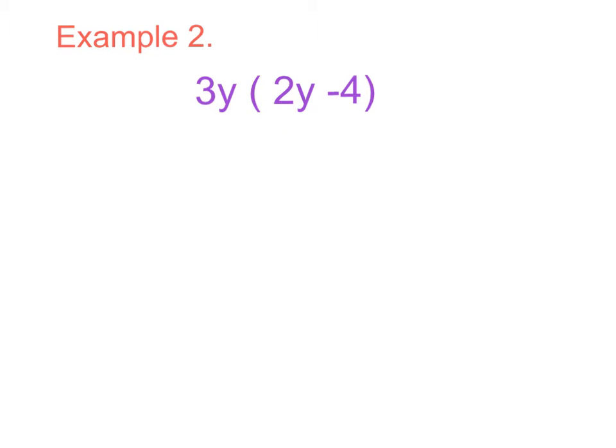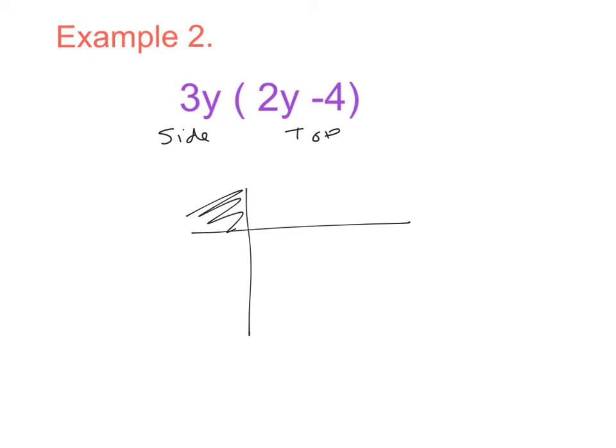Example 2: 3y multiplied by 2y minus 4. So side and top. Along the side I have 3y. Along the top I now have 2y and minus 4.